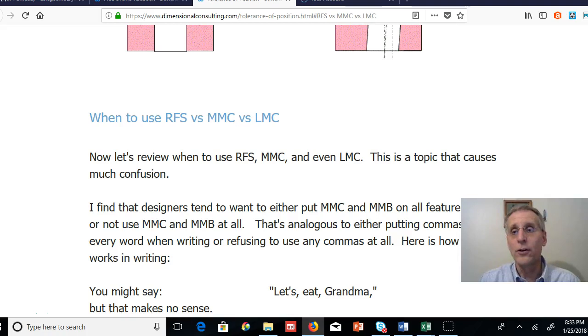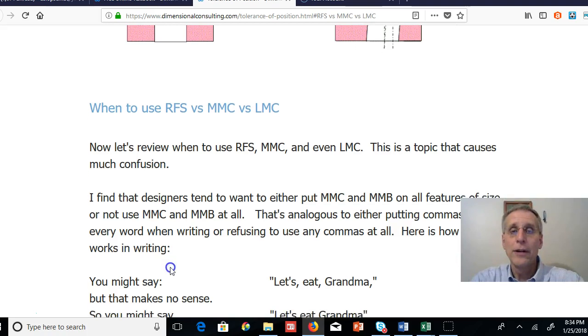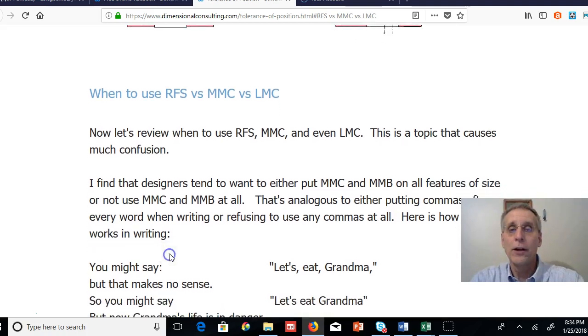Using the M's everywhere or using them nowhere is analogous to using commas everywhere or using commas nowhere. So for instance if you're writing or you're talking you probably would not say let's comma eat comma grandma comma you never get through what you're trying to say. If you wrote that way nobody would read it, nobody could get through it. And you probably would not go to the other extreme and say well I'm just gonna leave out all the commas and say let's eat grandma because now grandma's life is in danger.